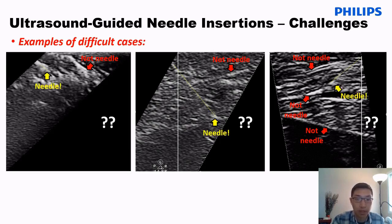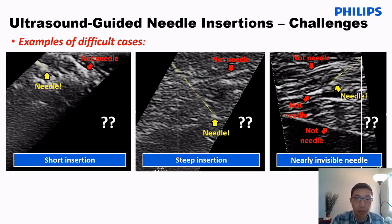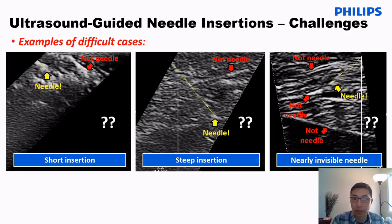As it turns out, the needle tip is actually here. These are typical scenarios. On the left is a short needle insertion where the needle tip is just entering the frame. In the middle, the needle is being introduced at a steep angle. And on the right, the needle is nearly invisible because of surrounding hyperechoic tissue structures.